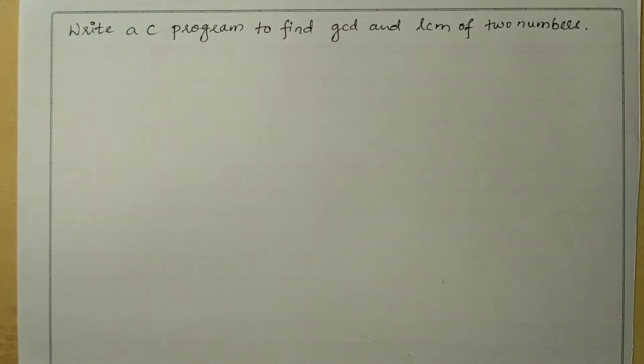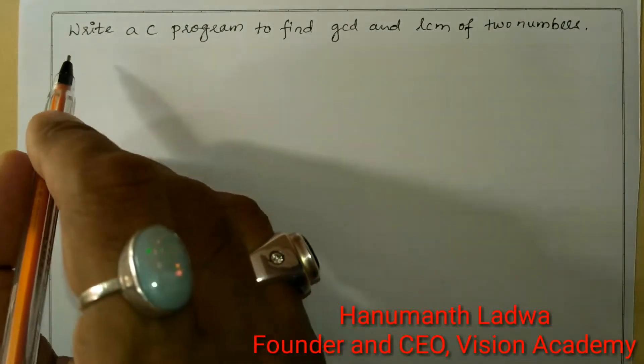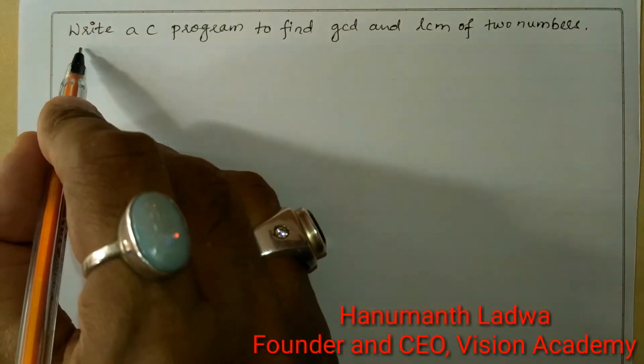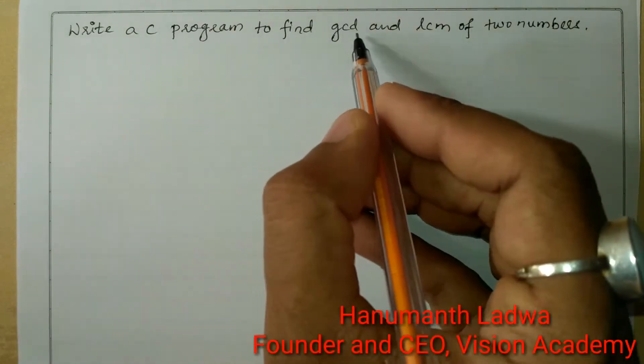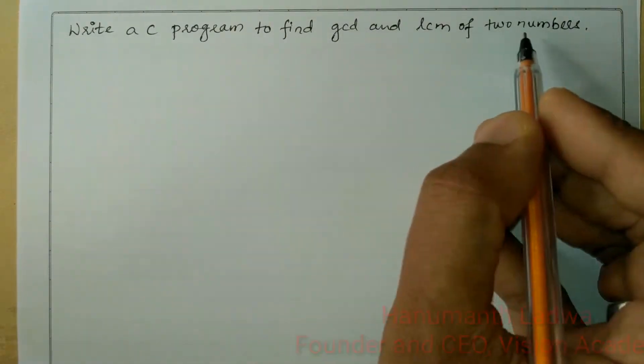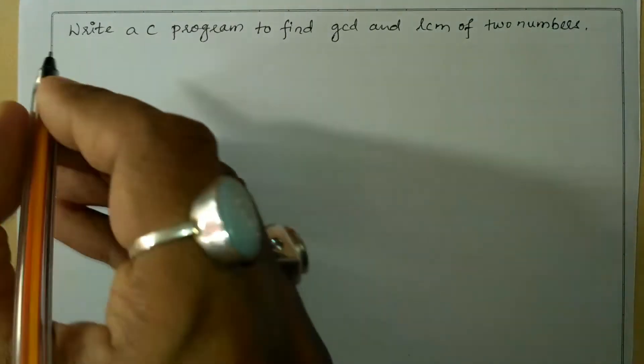Hello and welcome to Vision Academy. My name is Hanuman Fadwa and in this video we are going to write a C program to find GCD and LCM of two numbers.